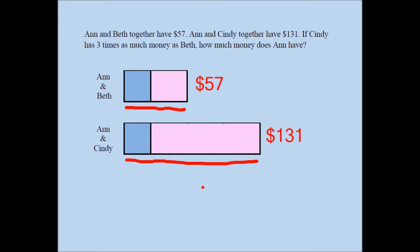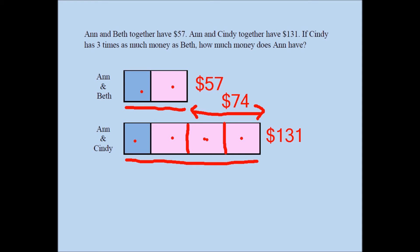The longer pink bar — Cindy's amount — is three times the shorter pink bar, Beth's amount. This picture allows us to find the difference between Cindy's amount and Beth's amount: $131 minus $57 is $74. So that difference has to be $74. Since Cindy is three times Beth, the difference equals two times Beth's amount. So $74 divided by 2 gives us $37.